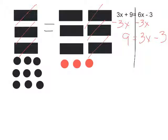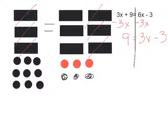Now when solving this, I can't just take away the 3 negatives on the right because I don't have any negatives on the left. Whatever I do to one side I do to the other. So if I was going to take away 3 negatives on the right, I would have to take away 3 negatives on the left. But I don't have any negatives on the left, so instead, in order to get rid of these 3 negatives, I'm going to add 3 positives on the right.